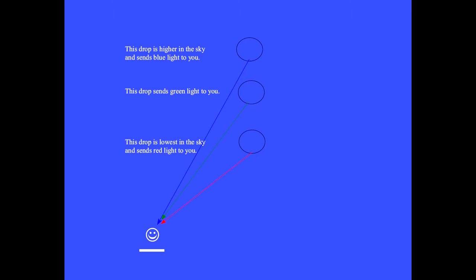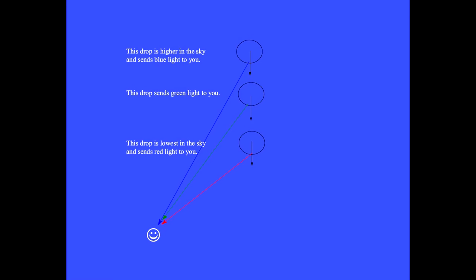As you look at a rainbow, each color that you see is coming from differing drops, located at differing heights above the ground. Blue and green colors are coming from drops that are highest above you. The red color is coming from drops at a lower height. These drops are actually falling toward the ground.